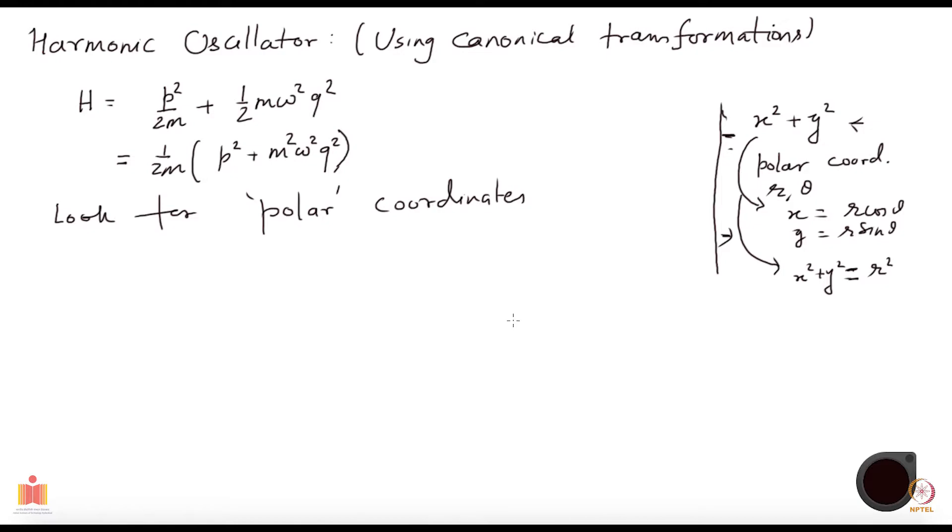How should we do that? Well, I should be looking for some canonical transformation because I do not want my equations of motion to get changed. So I am looking for canonical transformations, which means I should be looking for an appropriate generating function.